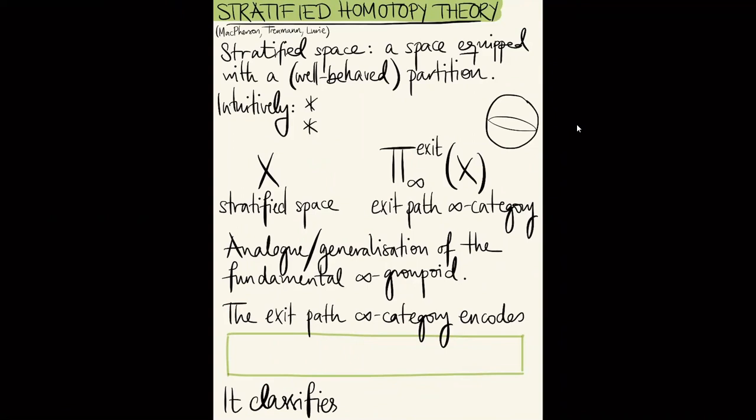Stratified homotopy theory is due to McPherson, Treumann, and Lurie at various categorical levels. A stratified space is a space equipped with a well-behaved partition into smaller well-behaved pieces. This is not a very restrictive condition — most natural stratifications you encounter will be sufficiently well-behaved.